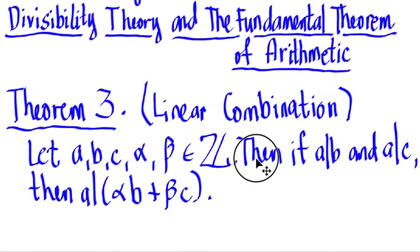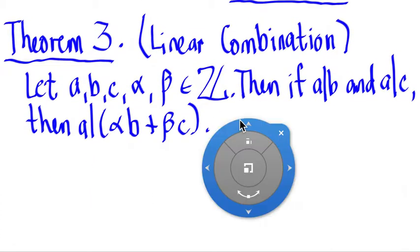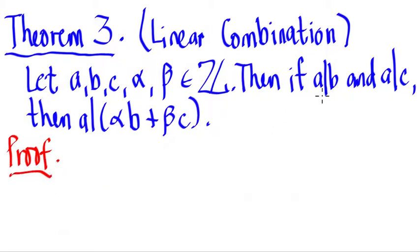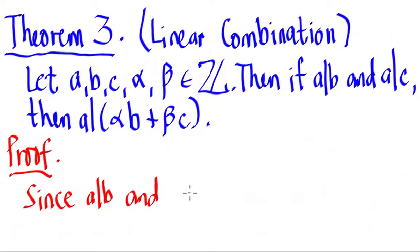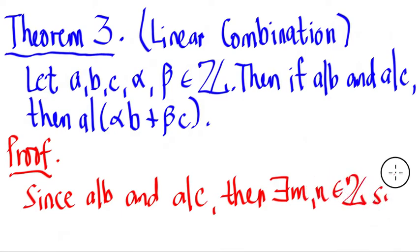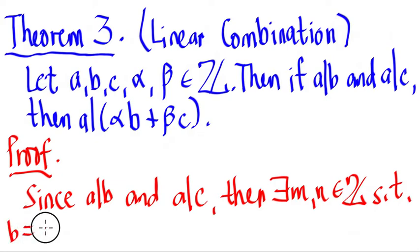So let's give a proof of this theorem. Going back to the concept of divisibility — you can watch the two previous videos for that. Since A divides B and A divides C, then there exists some M and N in the integers such that B is equal to A times M.